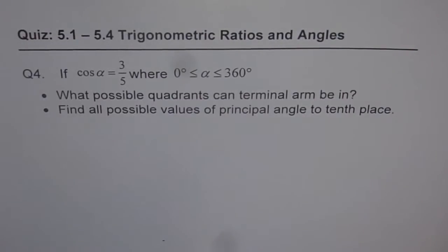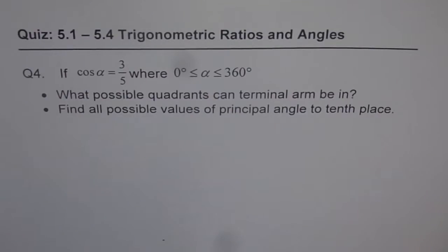Question number 4 on trigonometric ratios and angles. If cosine alpha equals 3 over 5, where alpha is greater than or equal to 0 and less than or equal to 360 degrees, what possible quadrants can terminal arm be in? Part B of the question is, find all possible values of principal angle to tenth place.